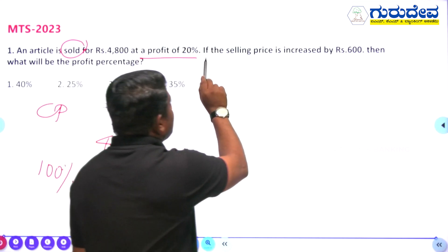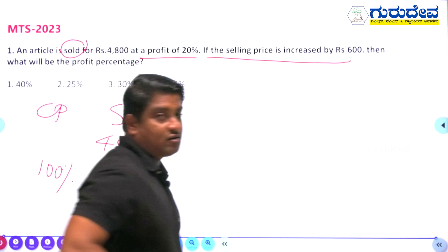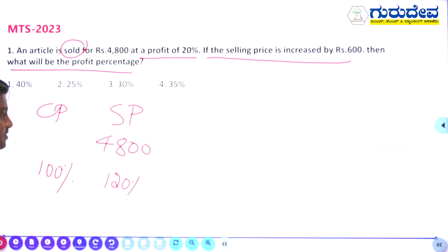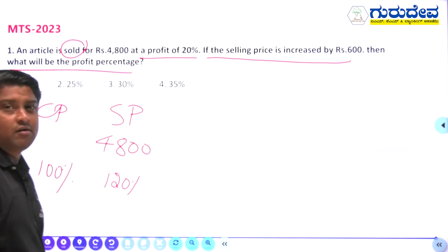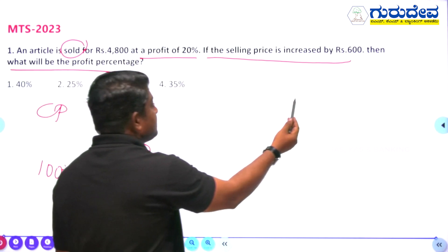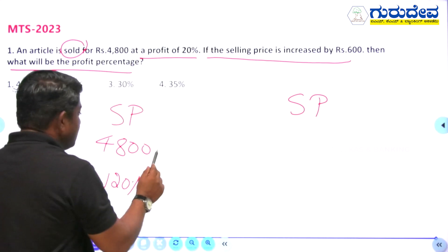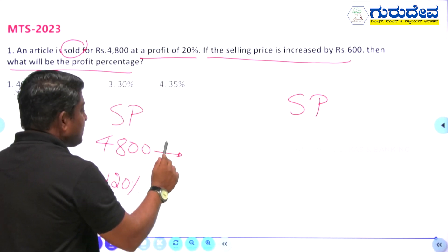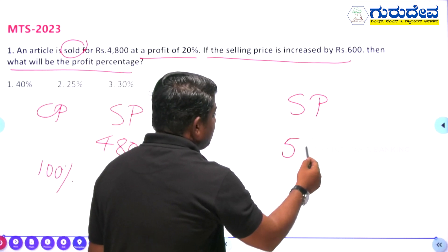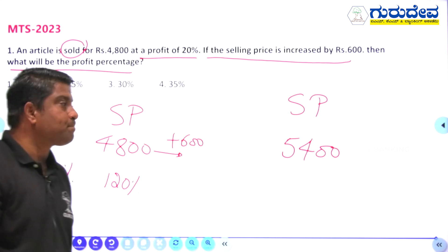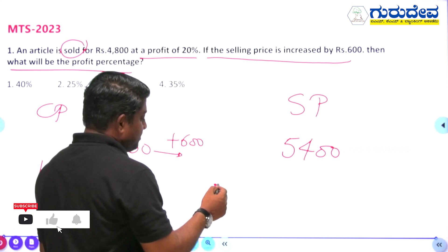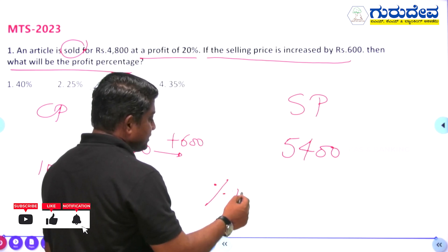Now the question says: if the selling price is increased by ₹600, what will be the profit percentage? We already have ₹4800 as the selling price. An increase of ₹600 means the new selling price is ₹5400.